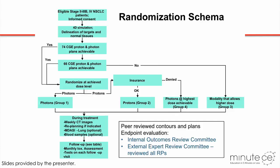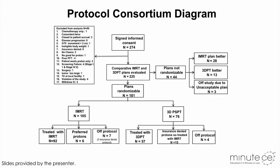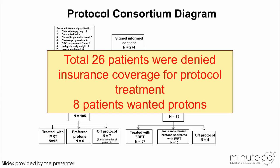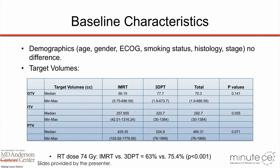This is the protocol consortium. As you can see, we enrolled 272 patients — 274 here because two patients were counted twice. 225 patients had a pair of comparable plans developed, with 105 randomized to IMRT and 76 randomized to proton. Among them, only a proportion were treated according to randomization. We had 26 patients denied insurance coverage for protocol treatment, and 8 patients chose to have proton therapy.